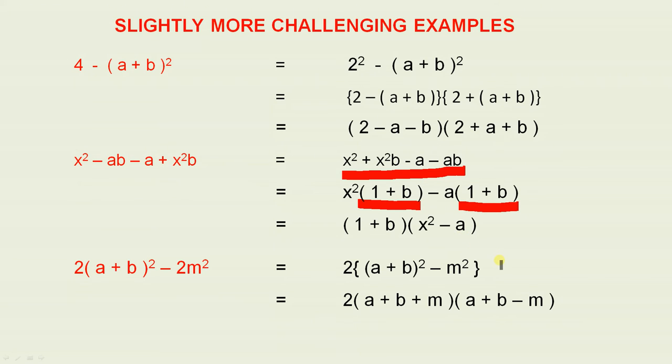The next one. 2(a + b)² minus 2m². All we do here, we take the 2 outside of the bracket, and we're left with 2[(a + b)² - m²].